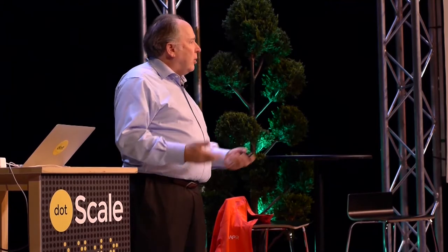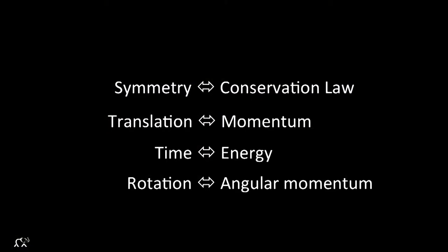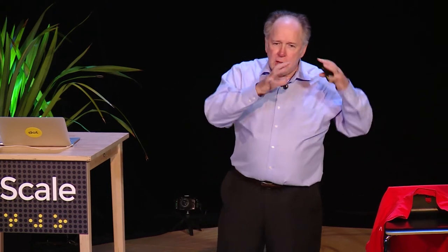A great example of understanding the world from first principles comes from physics. There's a wonderful theorem from the early 20th century that says that every example of symmetry in a physical law has an associated conservation law. If we have symmetry with respect to translation, then we have conservation of momentum. If we have symmetry with respect to time, we have conservation of energy. If we have rotational symmetries, then we have angular momentum conservation. This was due to a German woman, Emmy Noether, and her theorem relates the microscopic aspects of the world to the macroscopic aspects of the world.